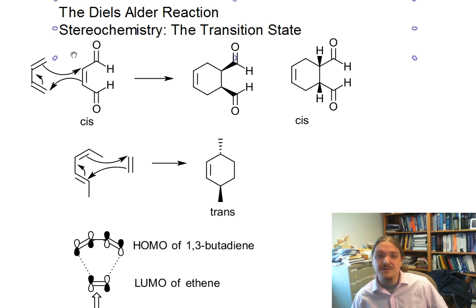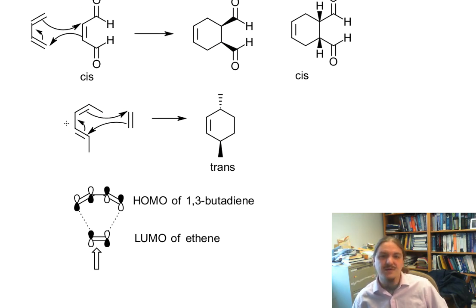The reaction is stereospecific in regards to the dienophile. If you have a cis dienophile, you get a cis product; if you have a trans dienophile, you get a trans product. It's also stereospecific with respect to the diene. If the groups on the ends of the diene are facing in the same direction, both in or both out, you get cis. If one's in and one's out, you get trans.